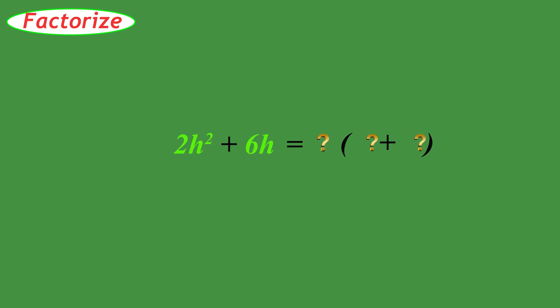Our final example is to factorize 2H squared plus 6H. The multiplier that goes in front of the parentheses is both a number and a variable — it's 2H. So 2H times what equals 2H squared? It must be H. And 2H times what equals 6H? It must be 3.